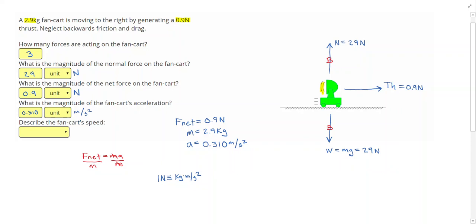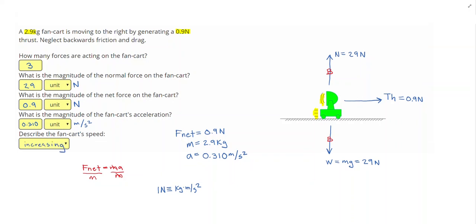And I describe the fan cart's speed. Well, I'm going to go back and look at my forces. And I also know that this cart is moving to the right. I can tell by those motion lines right there. I have more force acting forwards than backwards. And any time we have more force acting forwards than backwards, we know that our speed will be increasing.